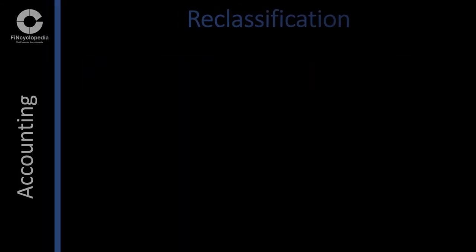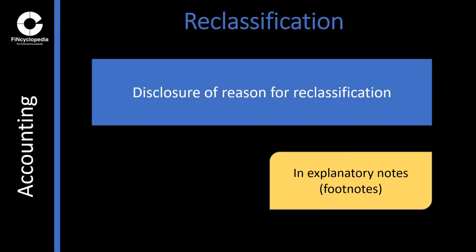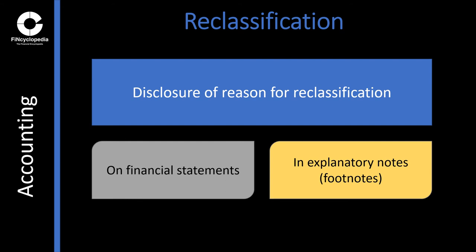The reason for reclassification has to be disclosed either on the financial statements or by means of an explanatory note or footnotes. For example, an entity may disclose in an explanatory note that a specific amount of its long-term debts has been reclassified to short-term debts during the financial period, because it decided to pay off that amount of debt early rather than over the originally planned maturity.